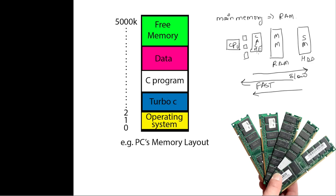The CPU is very fast compared to secondary memory, so the CPU does not directly communicate with secondary memory. It communicates with cache memory and main memory to bring data into the CPU, and the main memory communicates with secondary memory to bring data into the CPU.